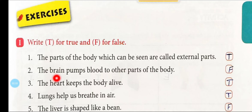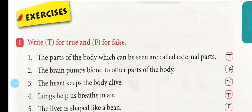Number two: 'The brain pumps blood to other parts of the body.' यहाँ पर लिखा है कि brain पूरी body में blood supply करने का काम करती है। तो क्या यह सही बात है? हम लोगों ने chapter में पढ़ा था कि heart जो है वो पूरी body में blood supply और pump करता है। तो यह गलत बात है — brain की जगह heart होना चाहिए था। इसके लिए हम लिखेंगे F, यानी false।